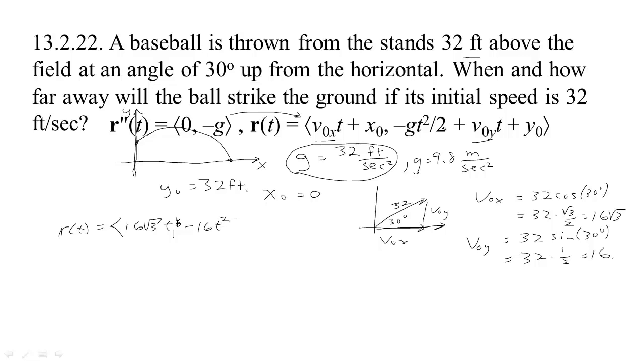32 for g and divided by 2. We'll leave minus 16 t squared plus v-not-y, which v-not-y is 16 t and y-not is 32.